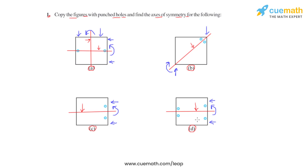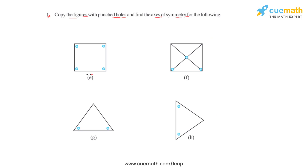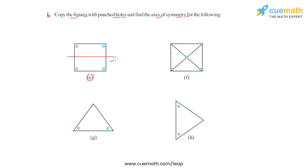Let us now see the next set of figures. In figure E, we again have a square. Based on the position of the punched holes and the symmetry of the figure, if we divide it into two equal halves using a vertical line and fold the figure about this line, both equal halves coincide — making this the axis of symmetry. We can also divide figure E using a horizontal line, and folding about that line also makes both halves coincide, giving us a second axis of symmetry.